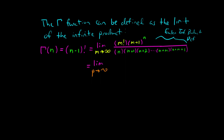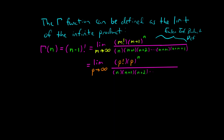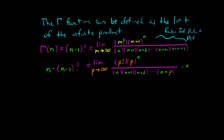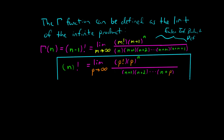We can simplify this a little bit — this was a simplification due to Gauss. He said this equals the limit as p approaches infinity of p factorial times p to the n, over n times n plus 1 times n plus 2, all the way up to n plus p. That's the Gauss form. If we want this infinite product to equal n factorial, we just multiply both sides by n, giving us the Gauss infinite product form for the factorial function.